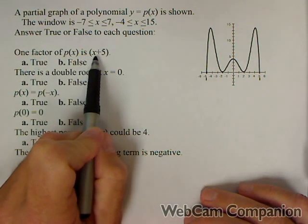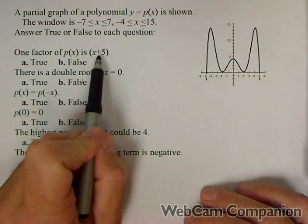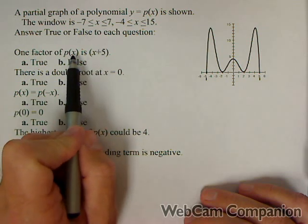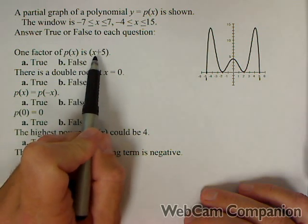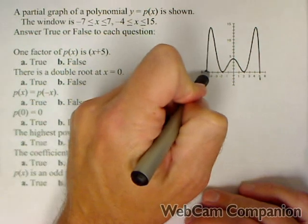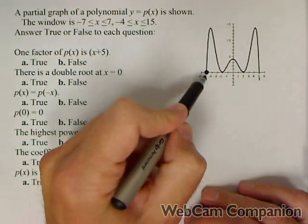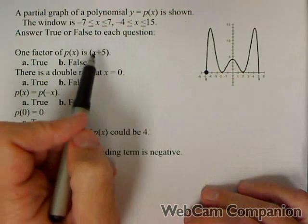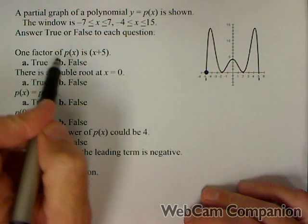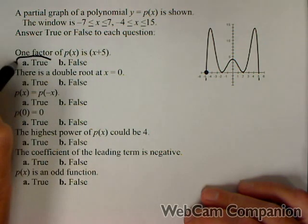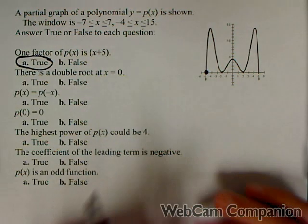So one factor of p(x) is (x+5). Well, if (x+5) is a factor of a polynomial, that means negative five would be a zero. So we see that happens right here, because in order to get negative five as a zero, (x+5) must be a factor. So that has to be true, because that means negative five makes the polynomial zero.